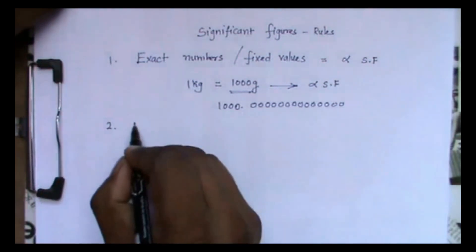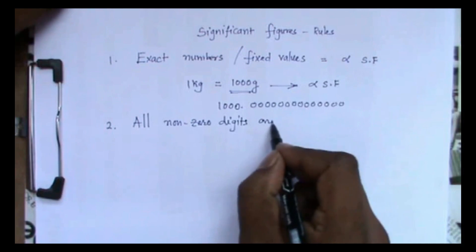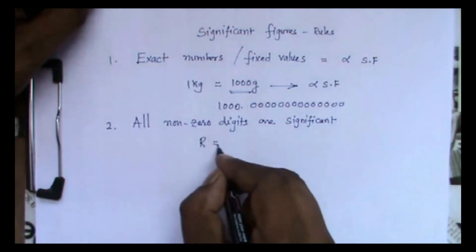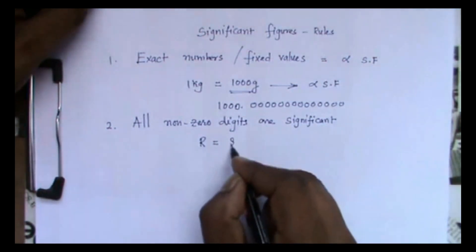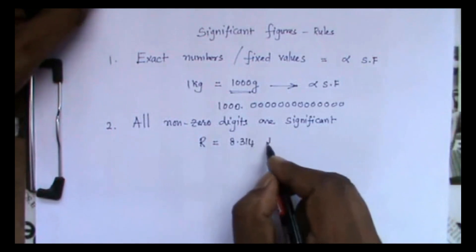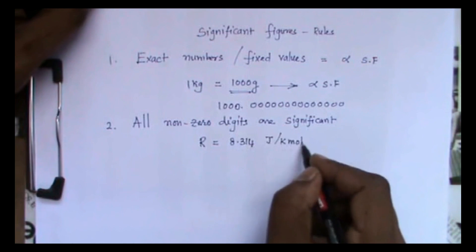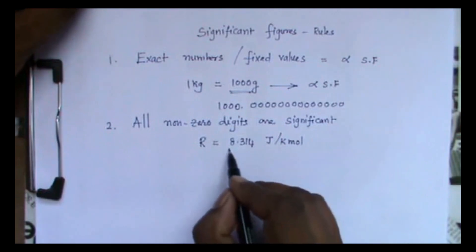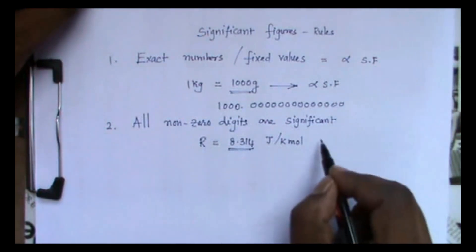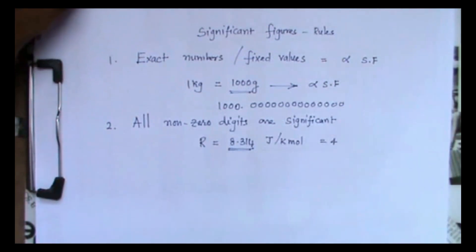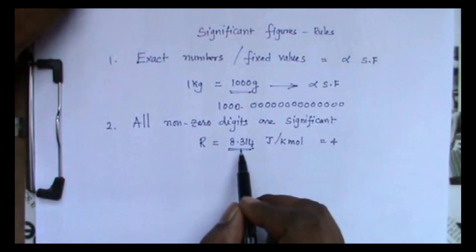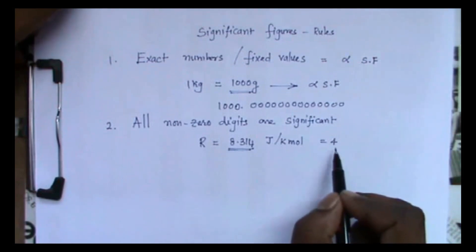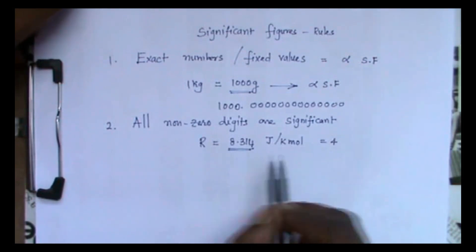The second rule: all non-zero digits are significant. For example, the universal gas constant is 8.314 joule per kelvin·mole. Here there are no zeros — only non-zero values — so all four digits are significant. The significant figure count for this value is four. We discuss only the digits, not the value of the constant itself.